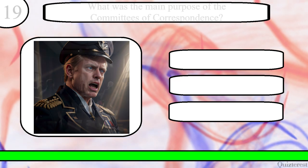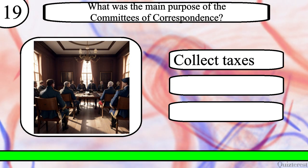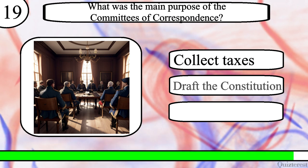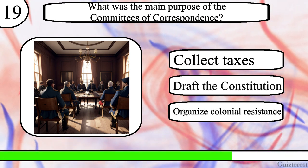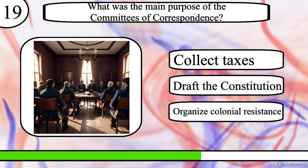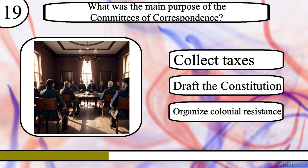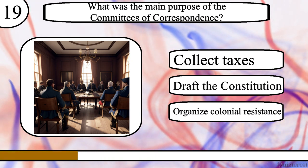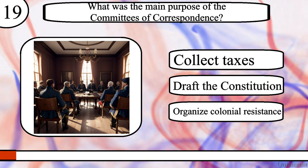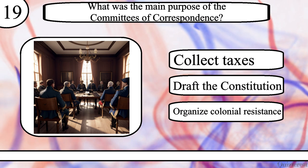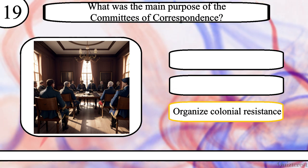Question 19. What was the main purpose of the Committees of Correspondence? Collect taxes, draft the Constitution, or organise colonial resistance? The correct answer is organise colonial resistance.